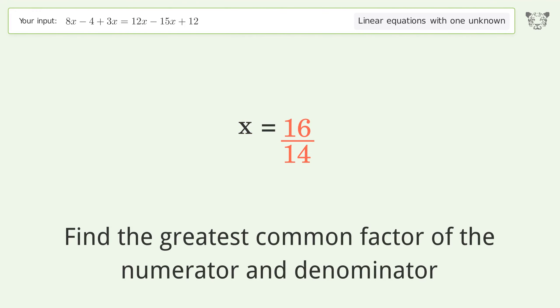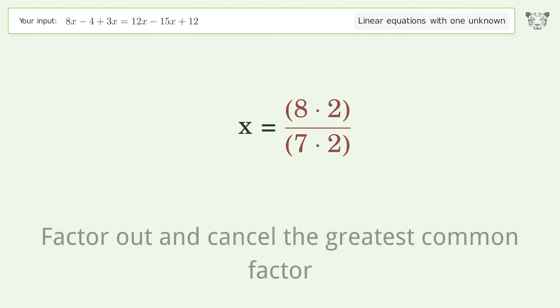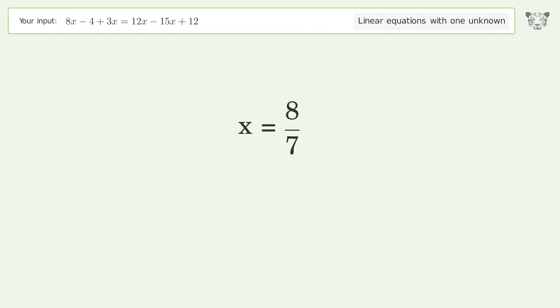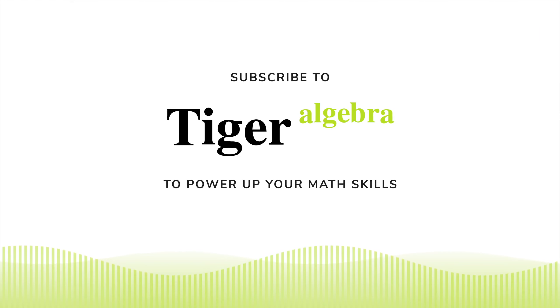Find the greatest common factor of the numerator and denominator. Factor out and cancel the greatest common factor. So the final result is x equals 8 over 7.